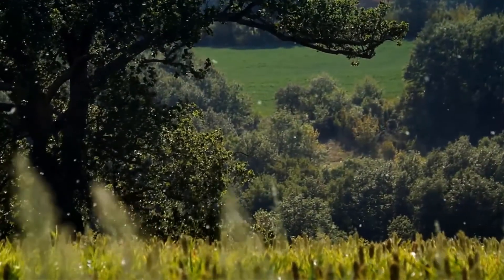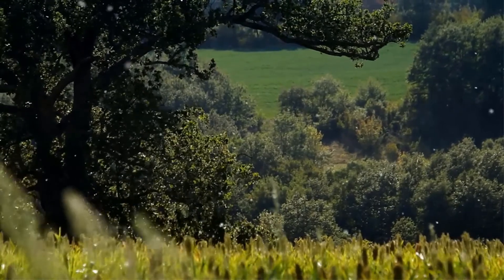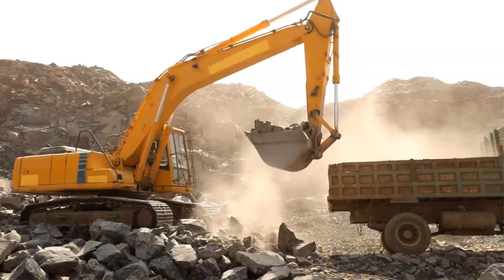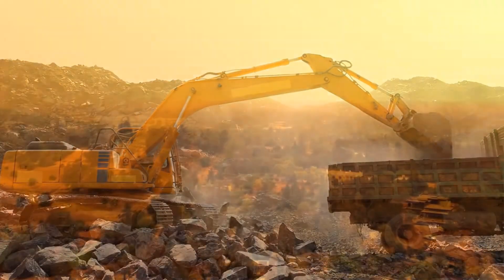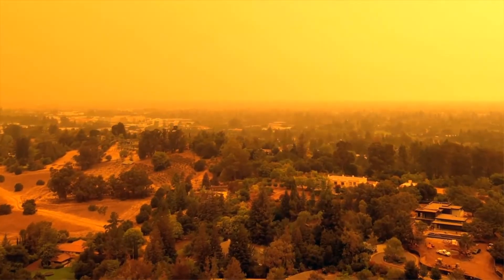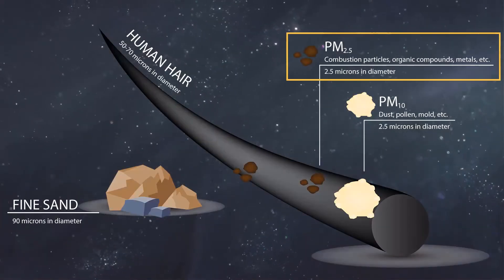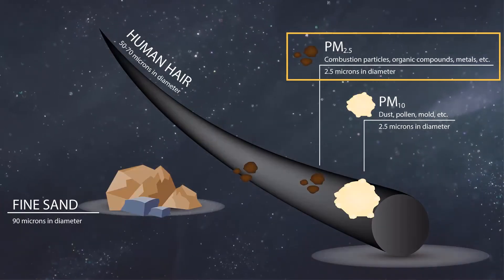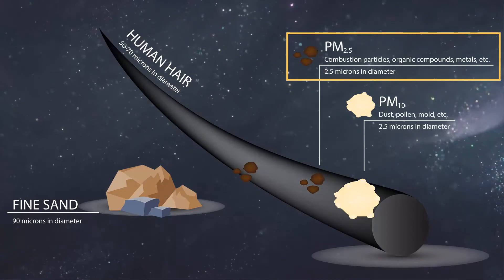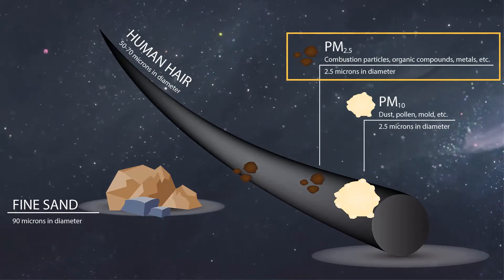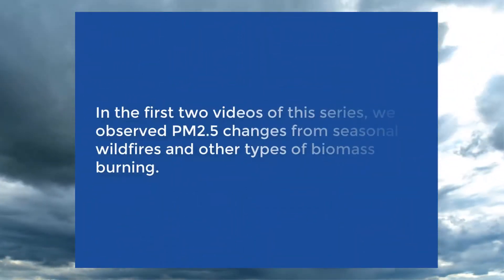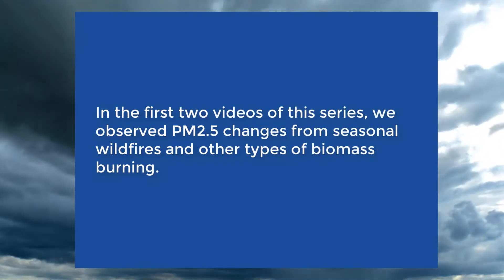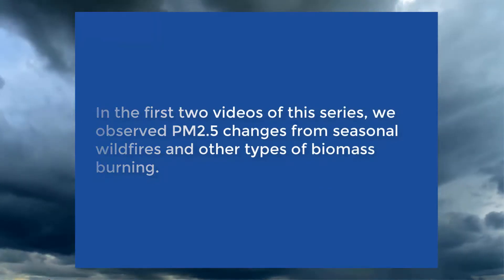Countless particles are suspended in our air at all times. Some of the particles you'll inhale from the air around you include dust from construction, stirred up material from wind storms, or emissions from fires. These particles, particularly those around 2.5 micrometers in diameter and smaller, called PM2.5, can cause health problems when their concentration in the air gets too high. In the first two videos of this series, we observed PM2.5 changes from seasonal wildfires and other types of biomass burning.